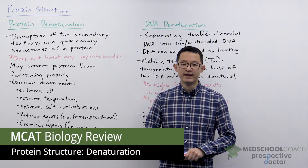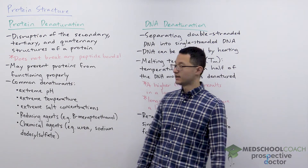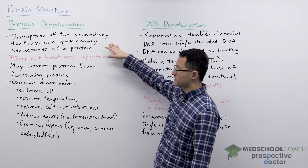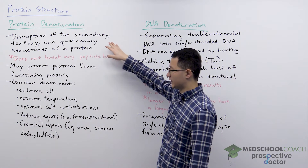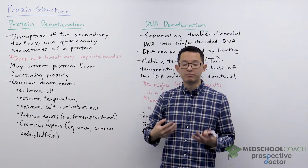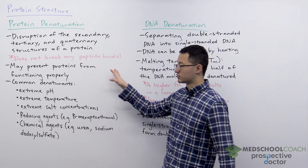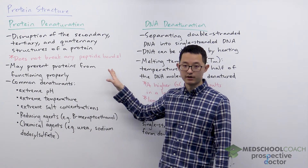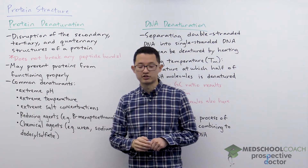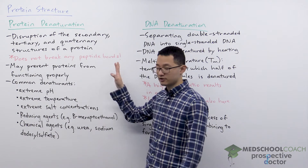In this video we're going to go over denaturation for proteins and DNA. Starting with protein denaturation, this can be defined as the disruption of secondary, tertiary, and quaternary structures of a protein — in other words, disrupting protein folding. It's important to know that protein denaturation does not break any peptide bonds, so it affects secondary, tertiary, and quaternary structures but does not affect primary structures.